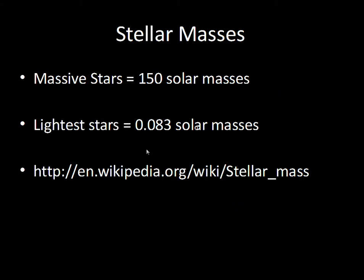Here are some results. A massive star — an extremely massive star — can be 150 times the mass of the Sun. And stars that are just barely a star, barely having nuclear reactions in the core, can be 0.083 solar masses. That gives us a range. The Sun is here at one solar mass. There are stars that are much more massive than the Sun, and there are stars that are much less massive than the Sun.